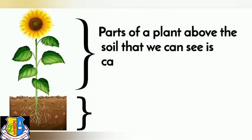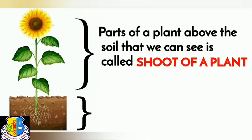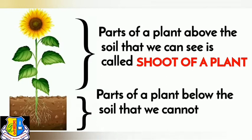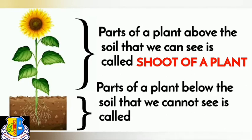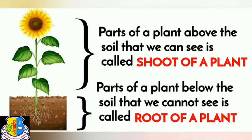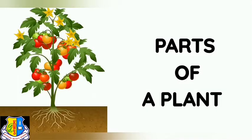Parts of a plant above the soil that we can see is called the shoot of a plant. Parts of a plant below the soil that we cannot see is called the root of a plant. Now we will learn about parts of a plant. They are mainly five parts.